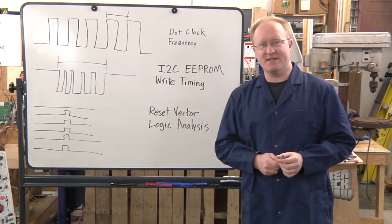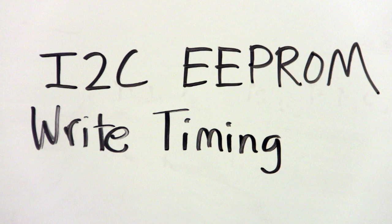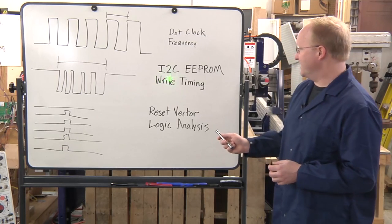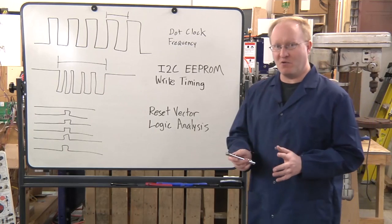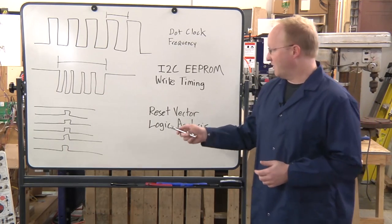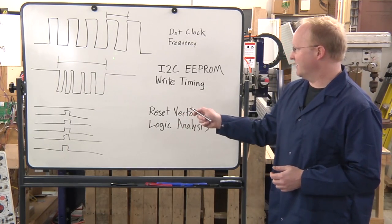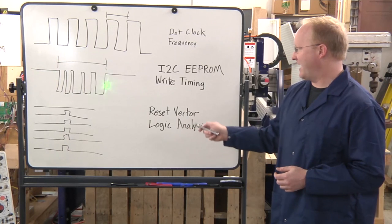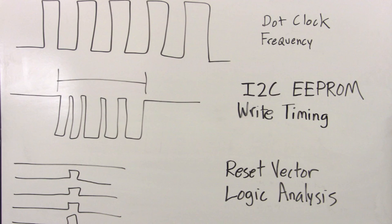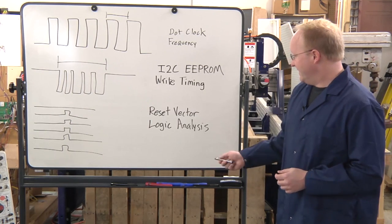The second thing we're going to look at is the timing of an I2C EEPROM write. I2C bus and writing EEPROMs are both kind of slow, so what we're going to do is we're going to use the oscilloscope to figure out exactly how long this packet takes to transmit.